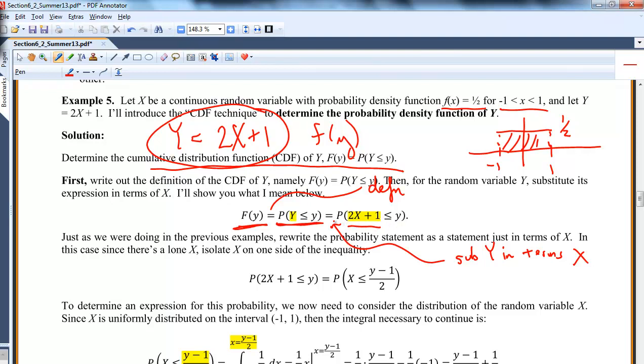And now I have a nice probability statement that I could actually do some integrating if I could just get x by itself. And that's just going to take some algebra. So down here I'm doing the algebra. I'm just isolating x. I'm moving the 1 over, dividing by 2. So here's my statement.